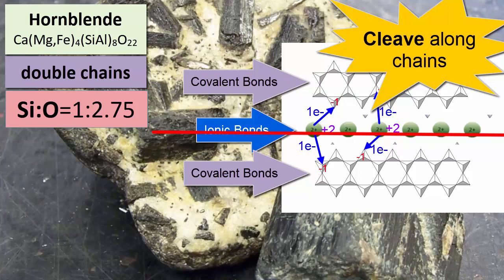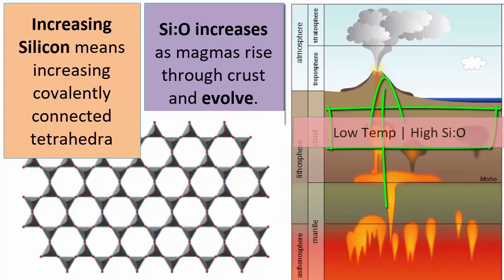Hornblende has a chemical formula of calcium, magnesium, or iron, four of them, silicon or aluminum, eight of them, 22 oxygens, and some water, OH2. As you can see from the chemical formula, water, OH, is incorporated into this mineral, and aluminum starts to substitute for silicon in the tetrahedra. Calcium, magnesium, and iron are all the electron donors that surround and glue together the double chains.